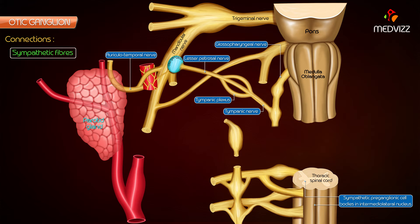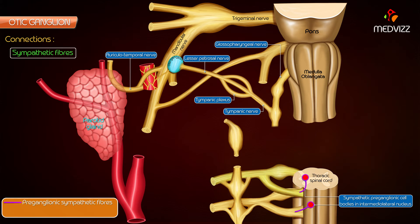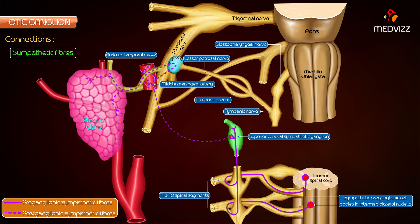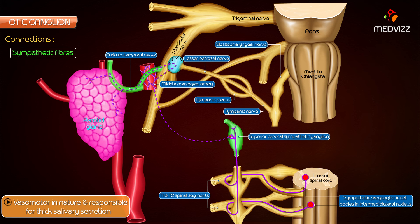Sympathetic fibers: preganglionic sympathetic fibers arise from the T1 and T2 spinal segments, enter the cervical sympathetic chain at the level of its inferior ganglion, and then relay in the superior cervical sympathetic ganglion. The postganglionic fibers arise from this ganglion and form a plexus around the middle meningeal artery. They then pass through the ganglion without any relay to reach the parotid gland via the auriculotemporal nerve. They are vasomotor in nature and are responsible for thick salivary secretion.